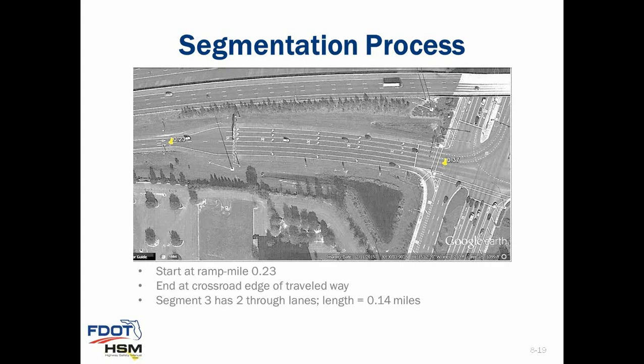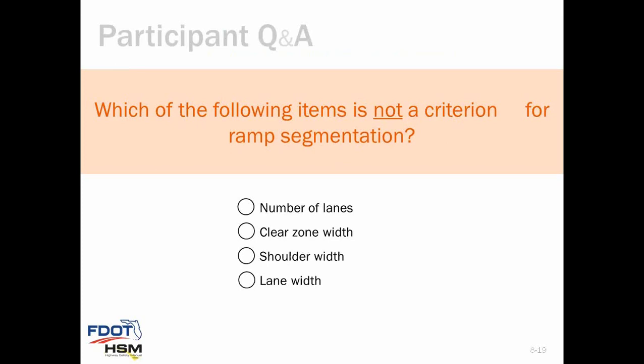Note that there are only two through lanes in the third segment. All other lanes were added as part of a turn bay and are not used to determine the number of through lanes. A quick poll: which of the following items is not a criterion for ramp segmentation? A) number of lanes, B) clear zone width, C) shoulder width, D) lane width. The correct answer is B, clear zone width. The other three items are used to determine segment boundaries; clear zone width is not.